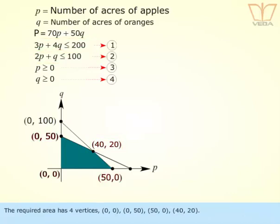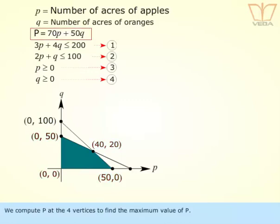The required area has four vertices: (0, 0), (0, 50), (50, 0), and (40, 20). We compute P at the four vertices to find the maximum value of P.